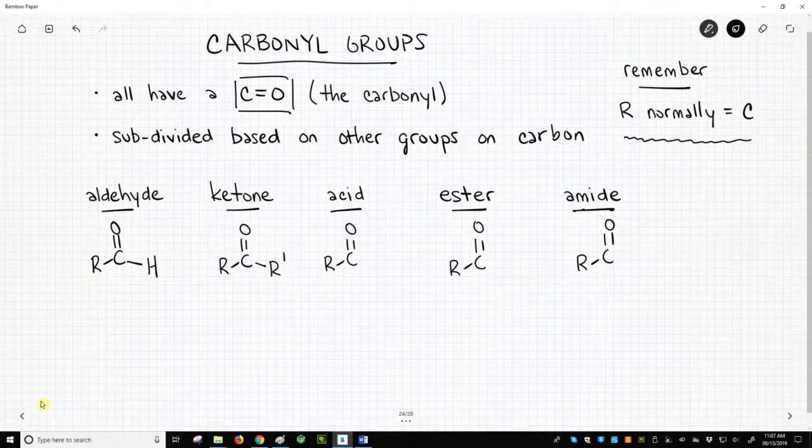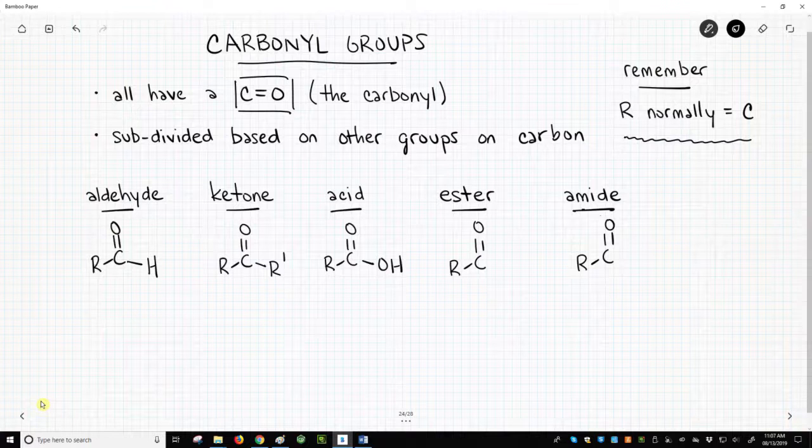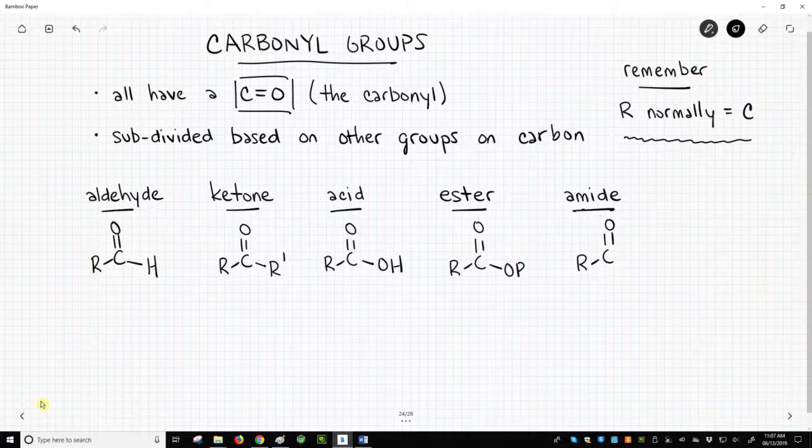Ketones are common in drugs. If the carbonyl is attached to an OH group, then it is a carboxylic acid, normally simplified to just acid. If the carbonyl is attached to an OR prime group, then it is an ester.